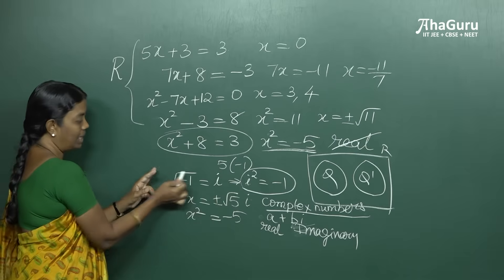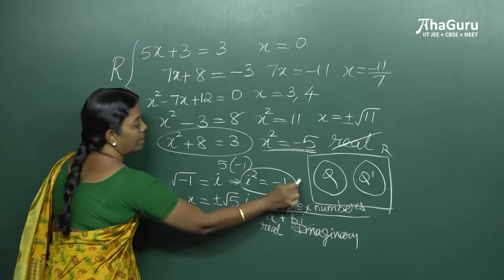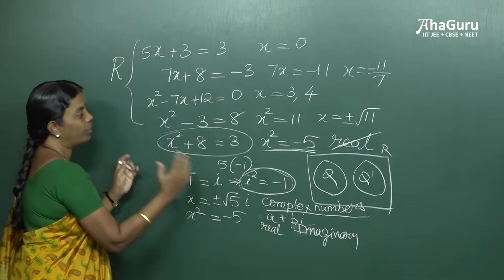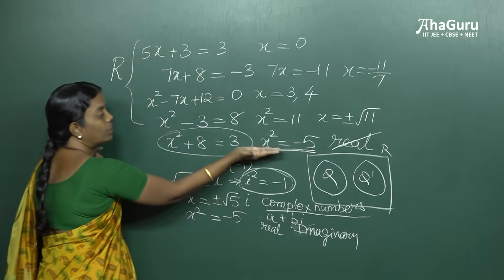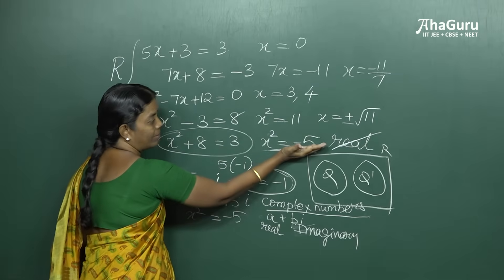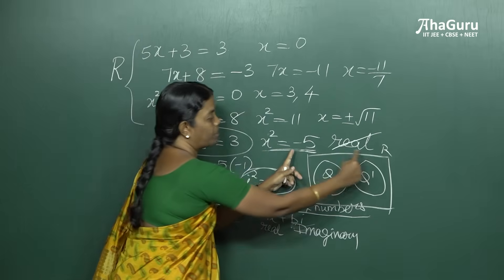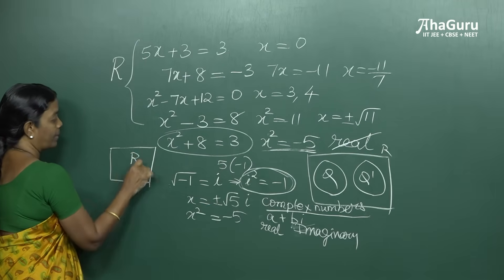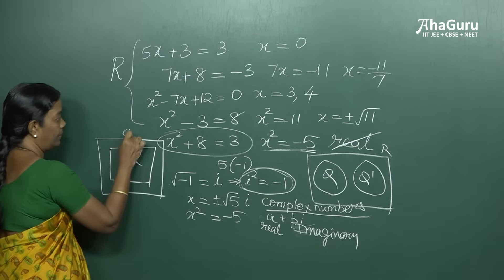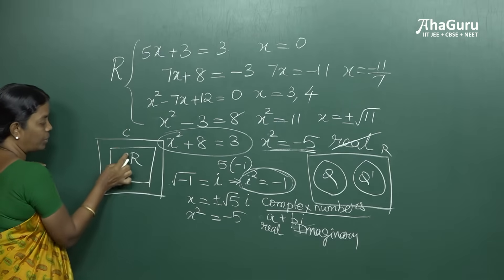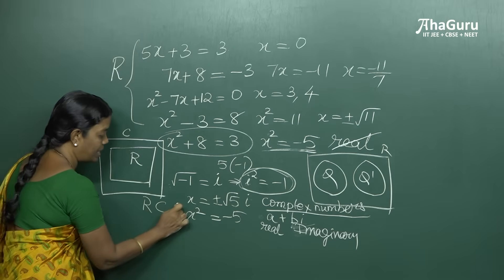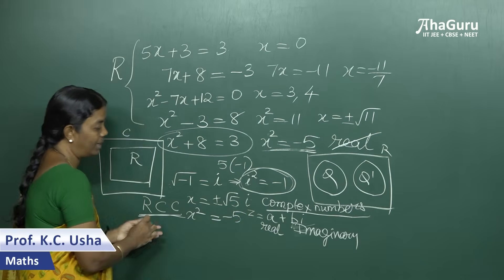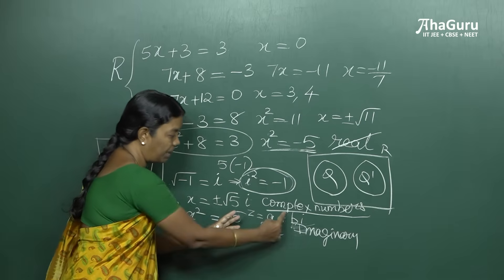As stated earlier, i equals root of minus 1, and therefore i squared equals minus 1. To accommodate the solution of equations where the square is negative — like x squared = minus 5 — we expand the set of real numbers to a bigger set. The set of real numbers is therefore a subset of the set of complex numbers. In general, a complex number is denoted by the letter z and its general form is a plus ib.